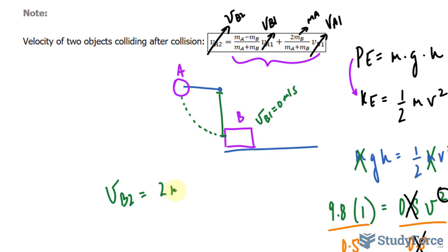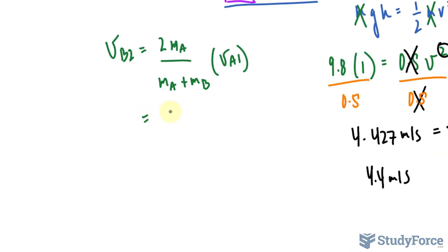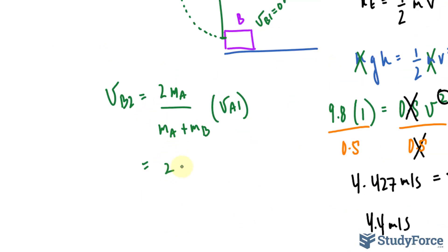2 times M sub A, or the mass of this steel ball, over mass of the steel ball plus the mass of the block times VA1. Let's go ahead and substitute everything we know. The mass of the steel ball as given in the question was 1 kilogram, and the mass of them combined, 3 plus 1, makes 4.